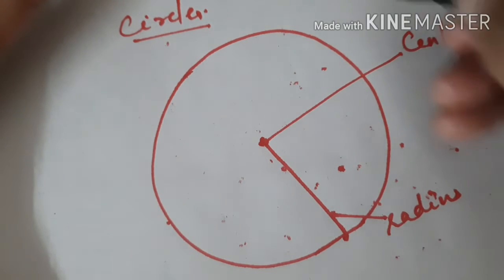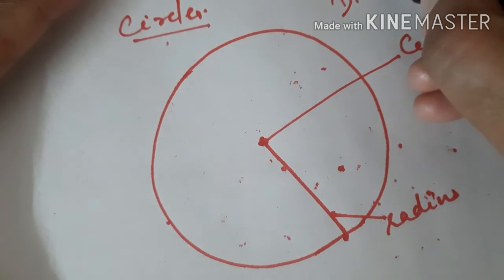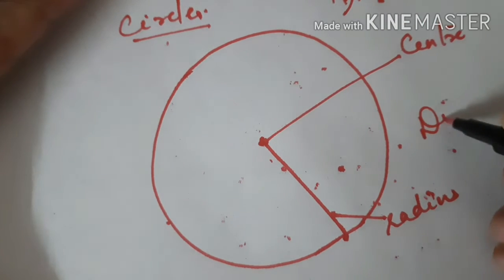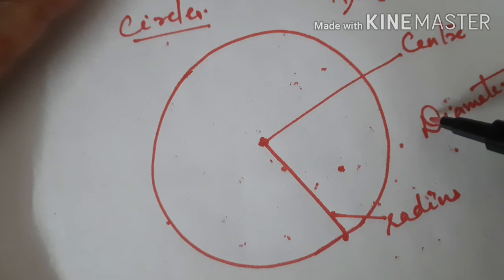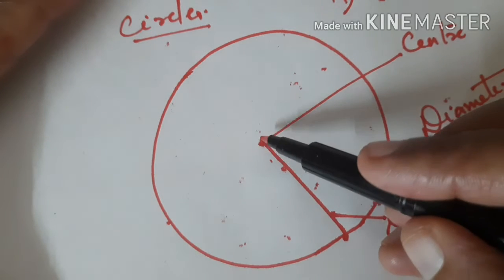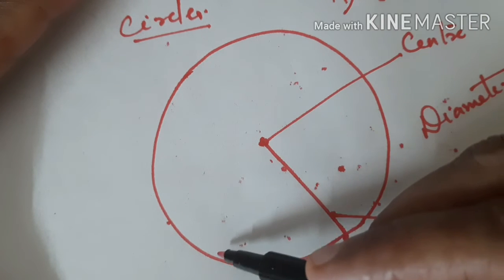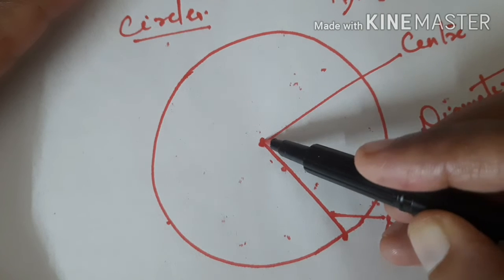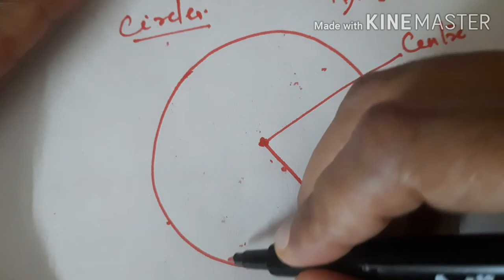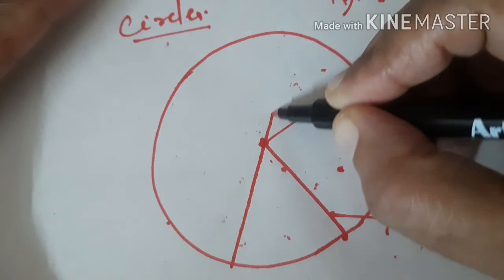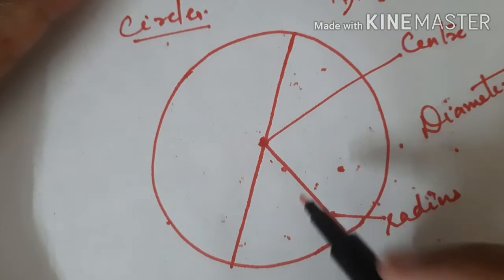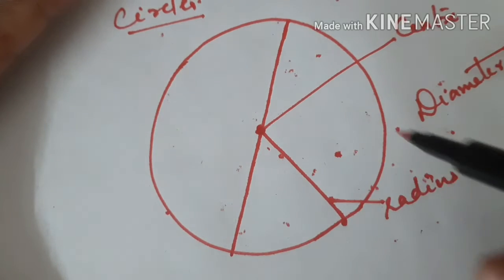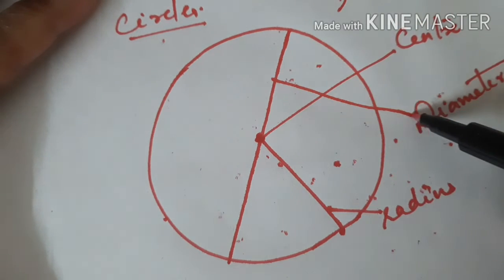Next is the diameter — that is also familiar to you. The diameter is the line joining two ends of the circle that passes through the center. So the line joining two ends of the circle through the center is the diameter.